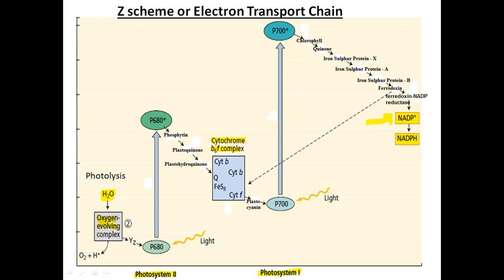In addition to these four major complexes, another protein complex is the oxygen evolving complex. When photolysis of water occurs, four protons are released and an oxygen molecule is released. For this release of oxygen, manganese ions, chloride ions, and calcium ions all help. The electrons released from water are transferred to a protein known as Yz, whose full structure and function are not yet known, so plant physiologists termed it Yz.